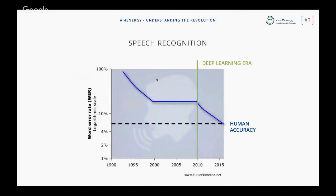In speech recognition, we were at a stall from around 2000 to 2010 — we couldn't make our algorithms better. From 2010 onwards, we were able to improve the accuracy of speech recognition systems to basically match human accuracy, and this happened in just five years.